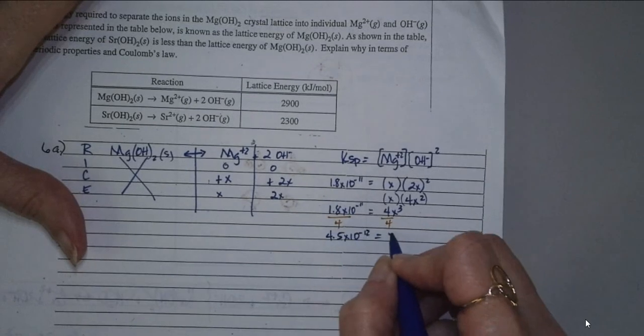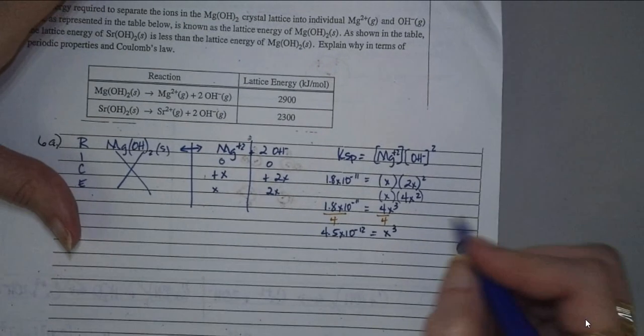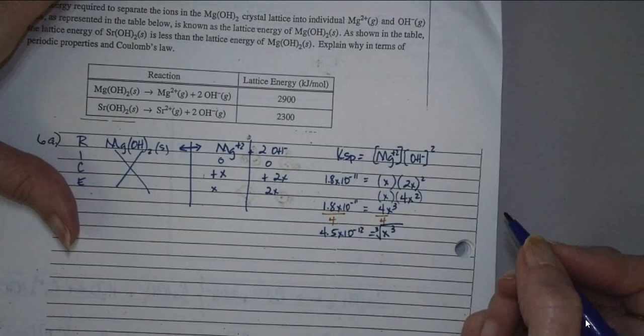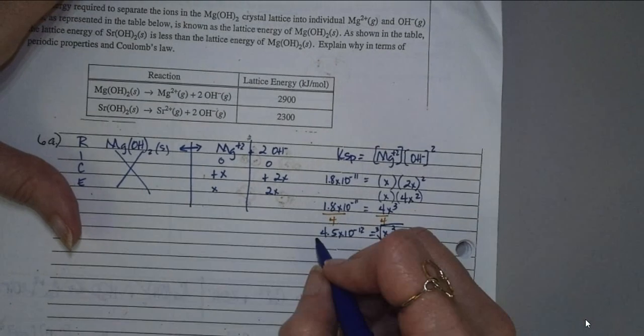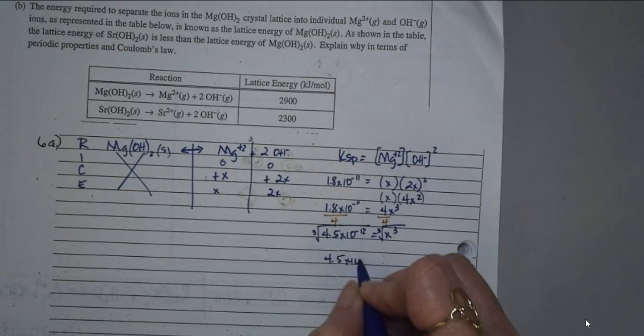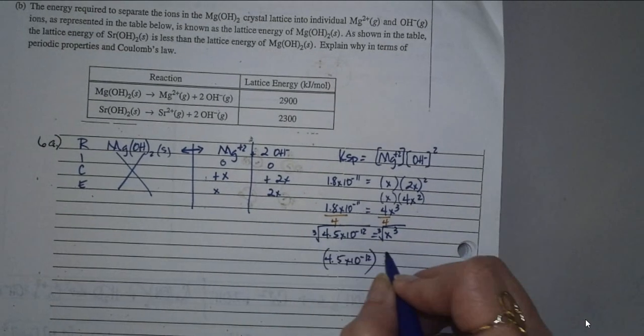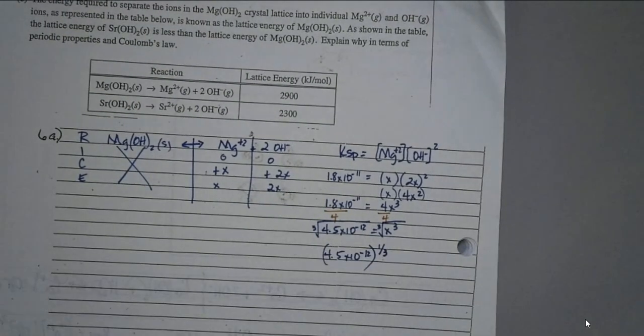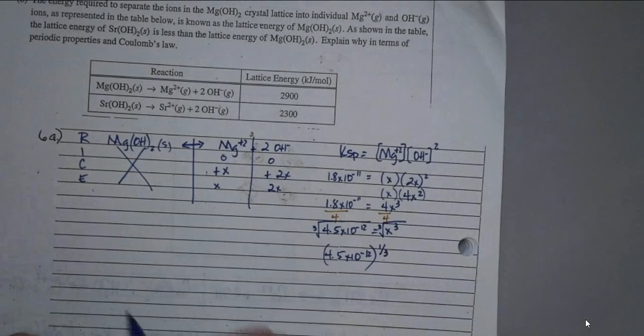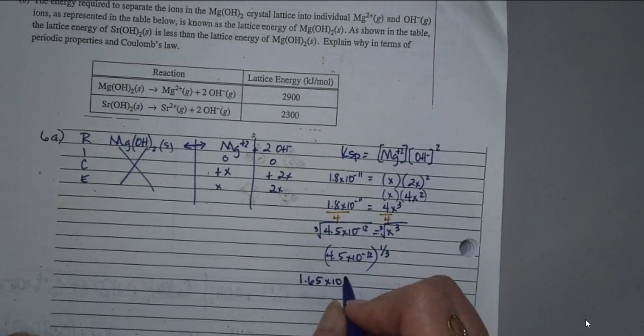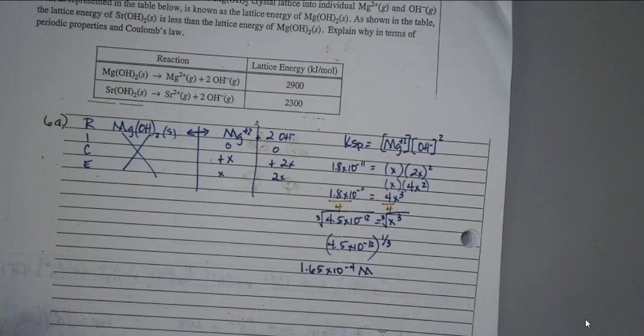So if we're taking the cubed root of this, or it's to the one-third power, then we would also take the cubed root of this side. So it's 4.5 times 10 to the negative 12 to the one-third. And did you guys get 1.65? So I got 1.65 times 10 to the negative 4 molar. Is that what they're asking us for? No. Here's the molarity. Remember, molarity is moles over liters.